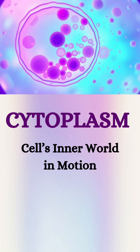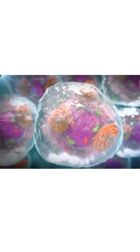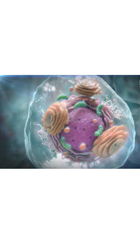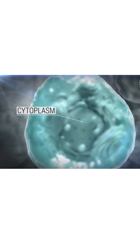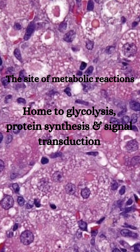Cytoplasm is the gel-like semi-fluid substance enclosed within the plasma membrane but outside the nucleus in eukaryotic cells. It forms the main site of metabolic activities and supports the structure and functions of various cell organelles. In simple terms, it is the entire region between the cell membrane and the nucleus, filled with life-supporting chemicals and cellular machinery.